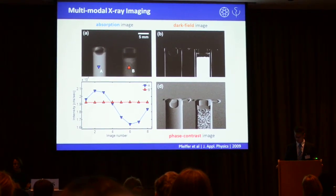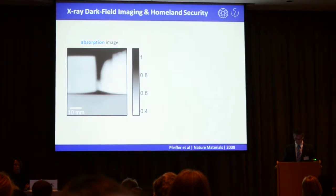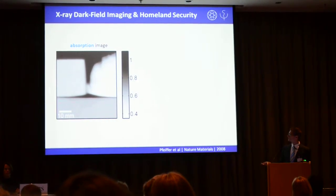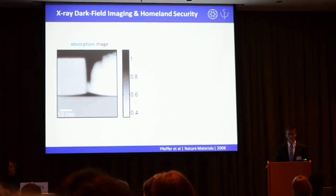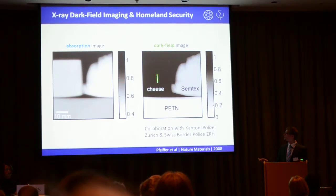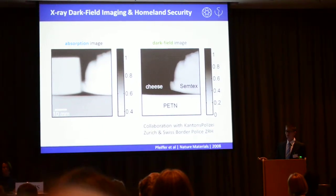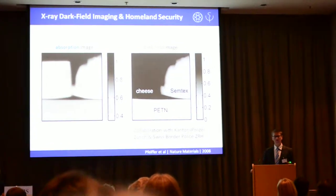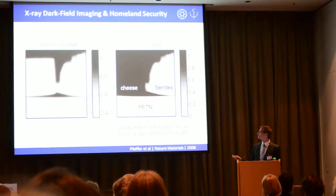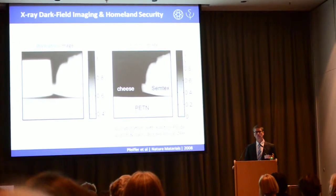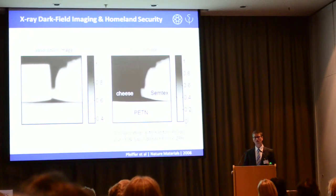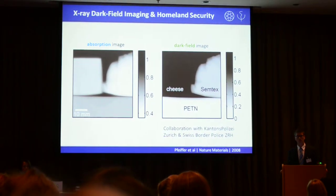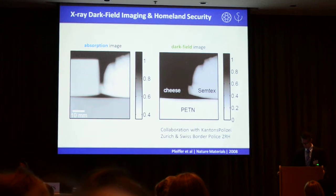That's why we also call it an X-ray dark field image, and it's actually quite interesting. For example, for those samples, these are pretty boring-like substances in attenuation. It turns out that this is homogeneous Gouda cheese, and these are two polycrystalline plastic explosives. Those two things are highly polycrystalline, so they have lots of density variations on the micron scale and diffuse the beam a lot. Homogeneous cheese is very uniform on the micron scale.